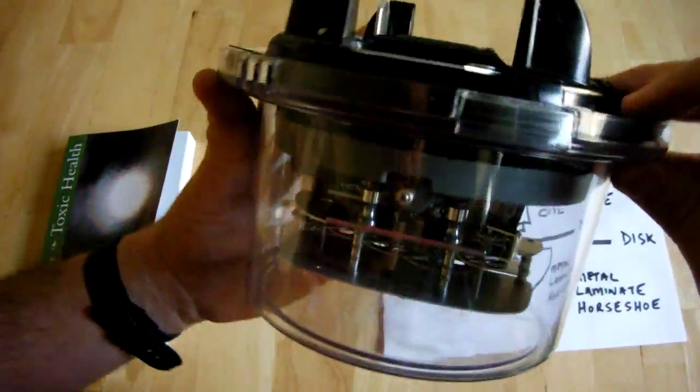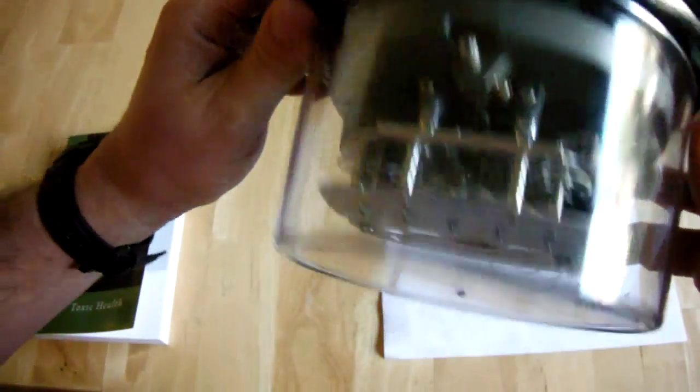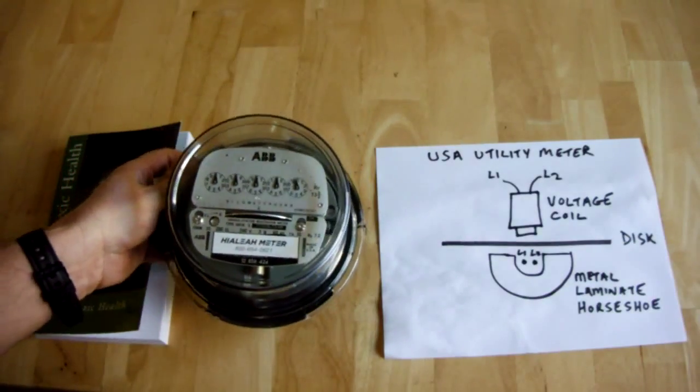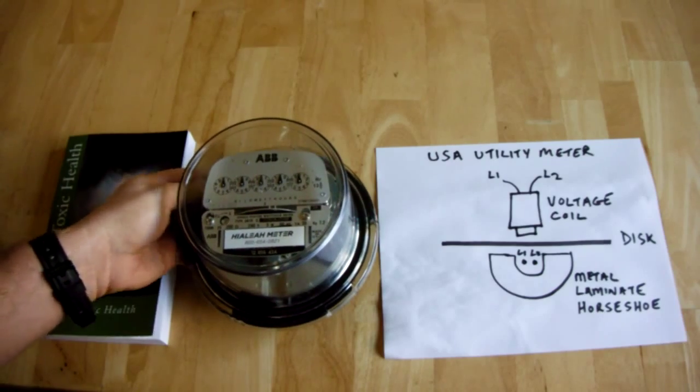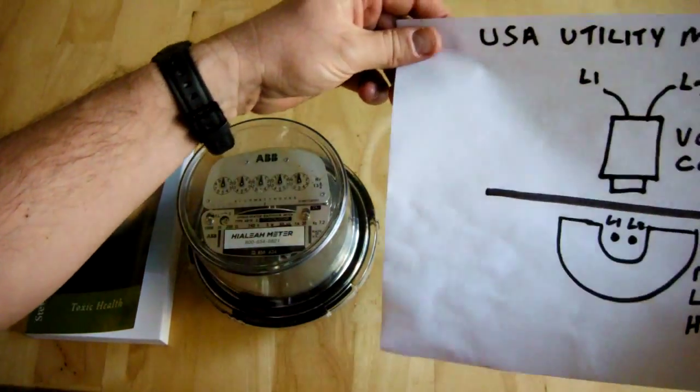And what we can't see is what's hidden behind here. I'm going to show you that on this diagram. And the reason why we're looking into utility meters is there's a lot of people getting sick around the new utility meters, the electronic ones.